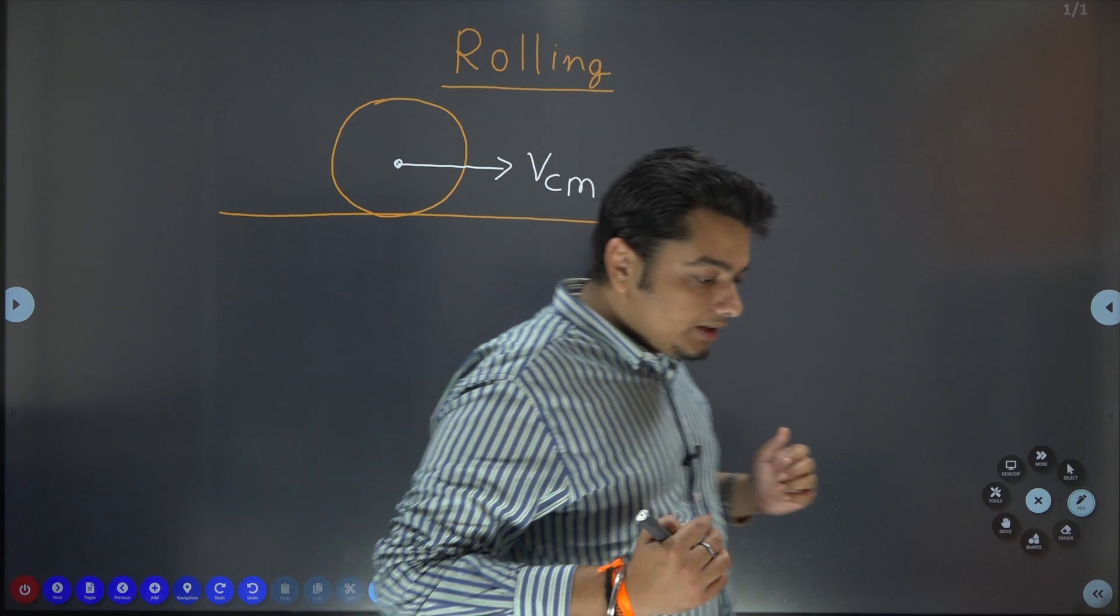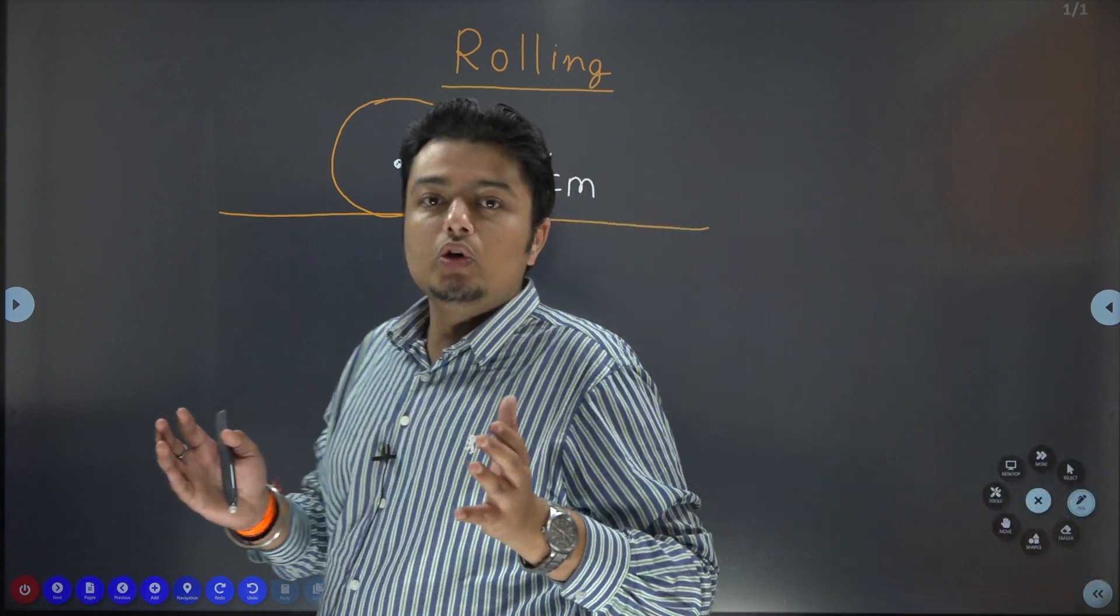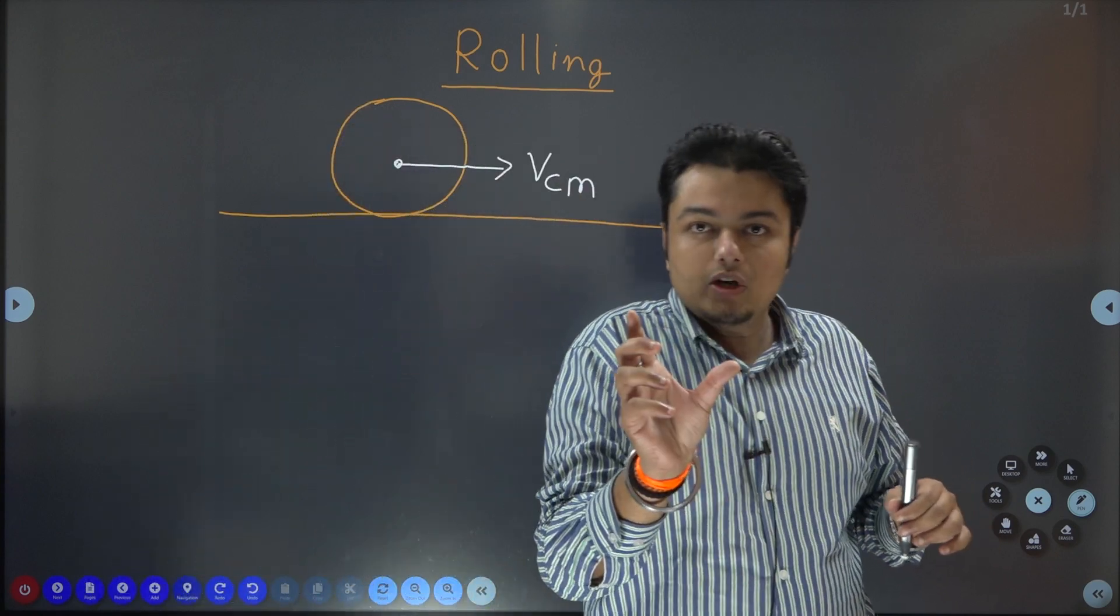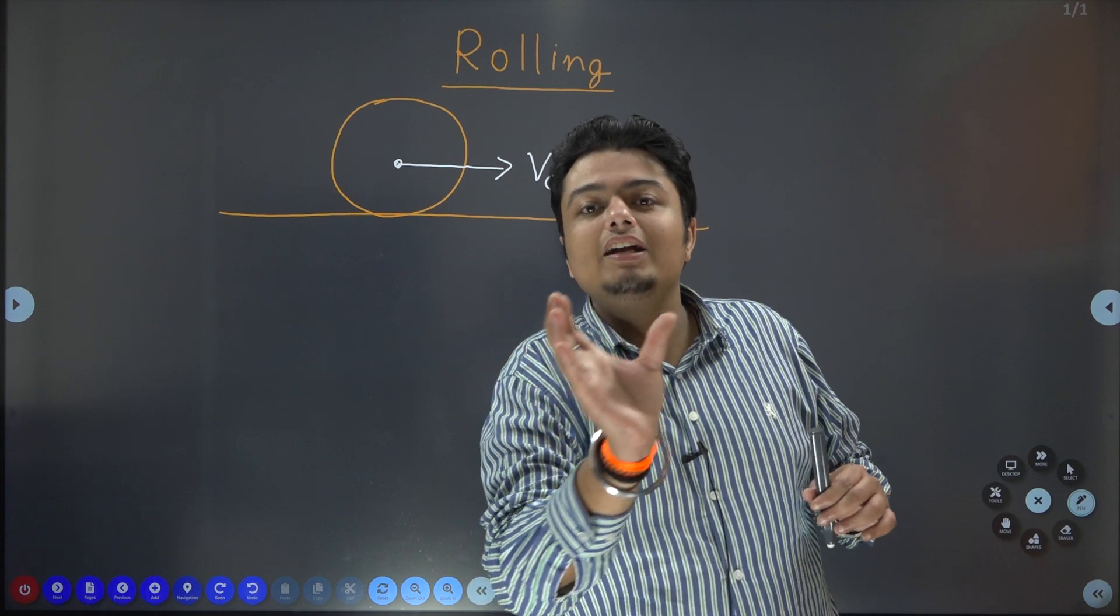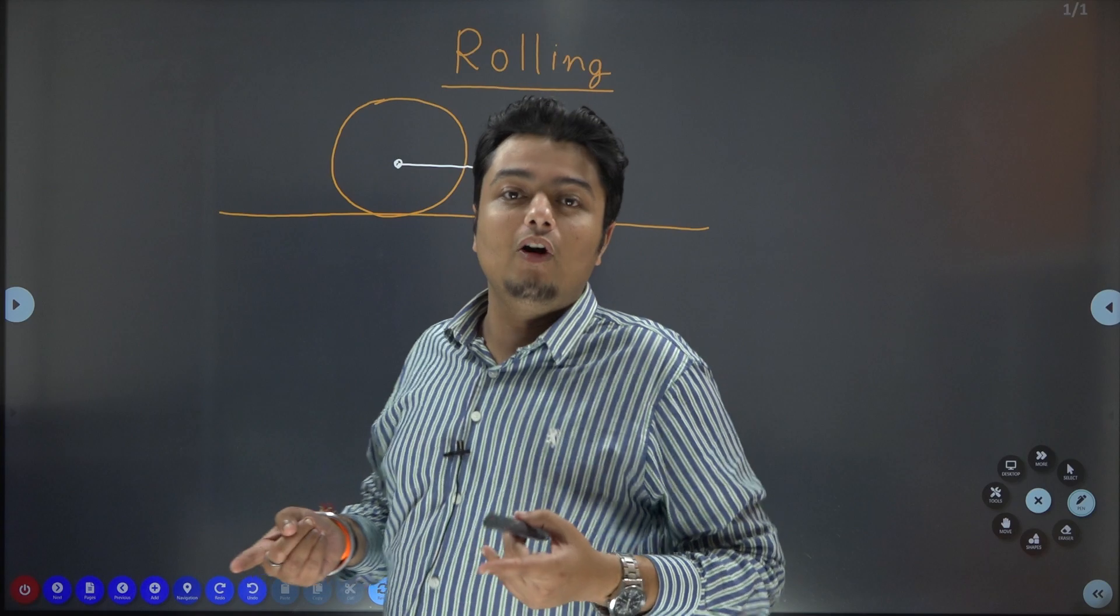Let us start. Whenever an object rolls, first of all you need to classify the objects which can roll. Like a cube cannot roll. Rolling is combined translational and rotational motion. So, this can only be performed by circular objects.